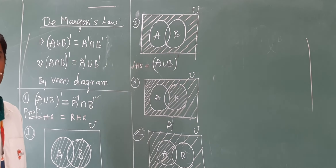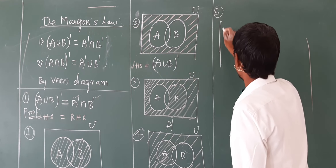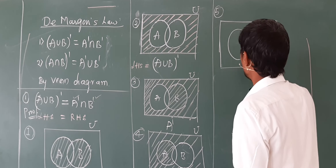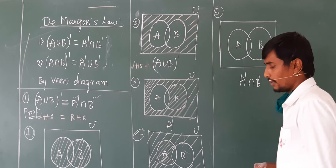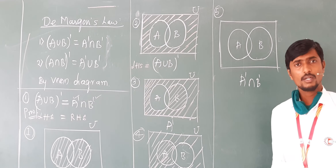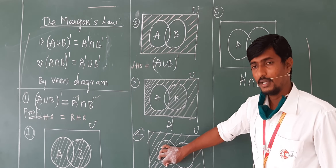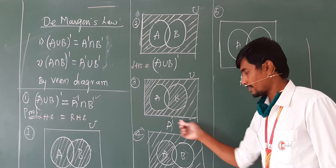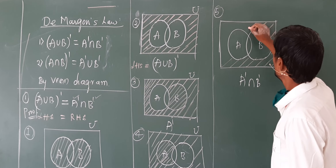Now our fifth and final diagram: this is set A and this is set B. I want to calculate A'∩B'. This means those elements common between A complement and B complement. Here inside A is empty in A', and inside B is empty in B'. The region outside both A and B is common to both diagrams, so only that shaded part is what we collect for A'∩B'.